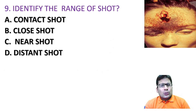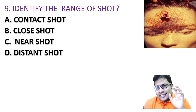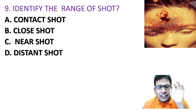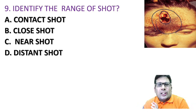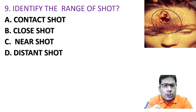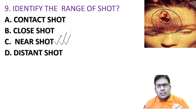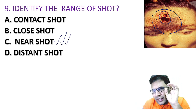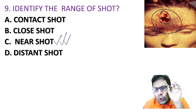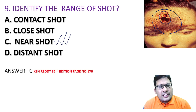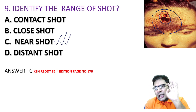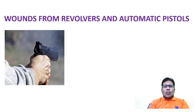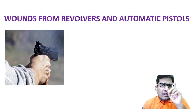Question 9: identify the range of the shot — this is a little controversial question. Options are contact shot, close shot, near shot, and distant shot. You can see an entry wound surrounded by tattooing. Whenever you see tattooing, it must be a case of near shot. The answer is near shot, according to KSN Reddy page 170. There are four types of ranges for revolvers and automatic pistols.